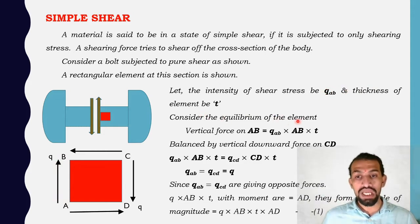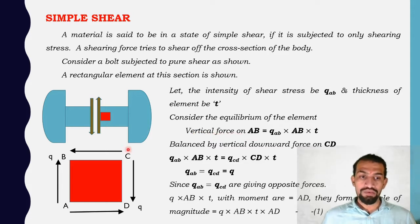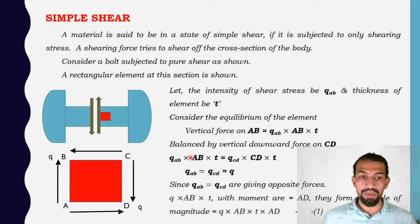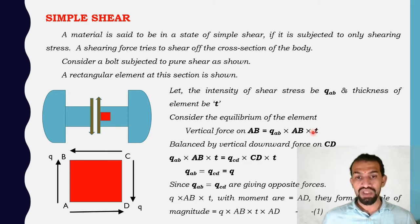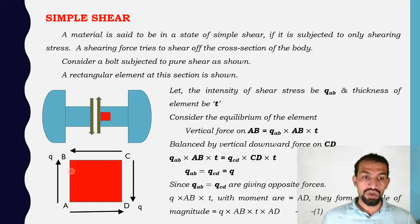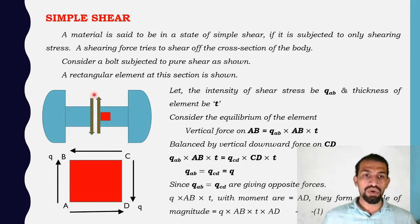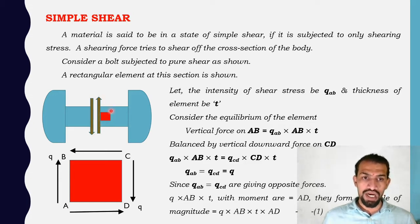Consider the equilibrium of the element. The vertical force on face AB is Q·AB multiplied by thickness T. This is balanced by the vertical downward force on face CD. So if the force is going upward on one side, on the opposite side it comes in the downward direction — that is what we call balanced.